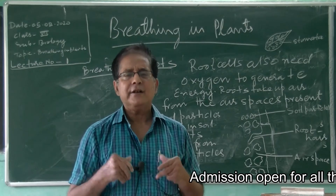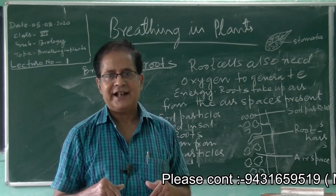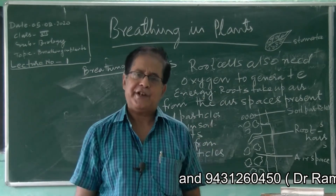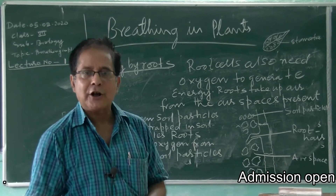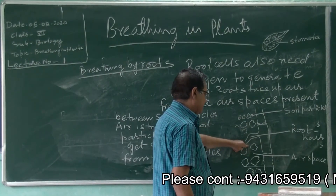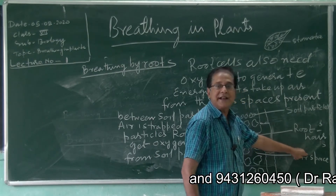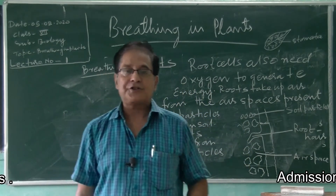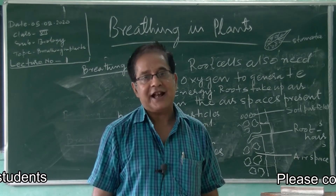But roots also need oxygen to break down glucose and to get energy. They cannot take free oxygen from the atmosphere directly. So how do they get oxygen? The roots are underground, found in the soil. There are soil particles in which air is trapped. The roots absorb this oxygen from the soil particles in which air is trapped.